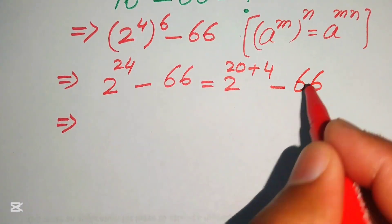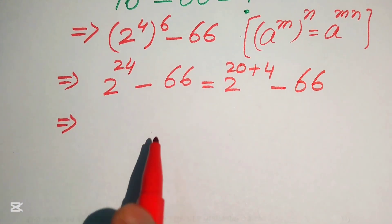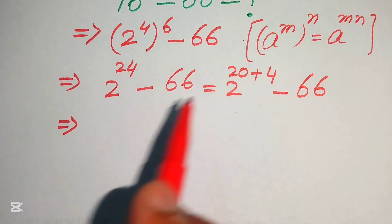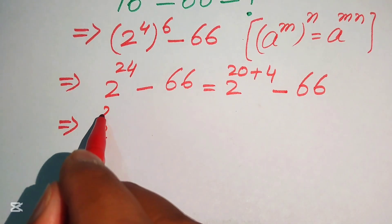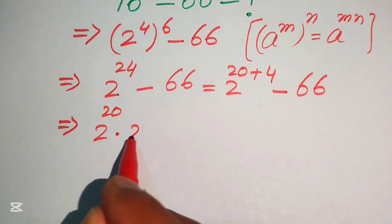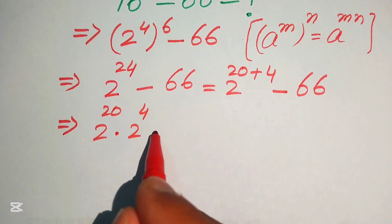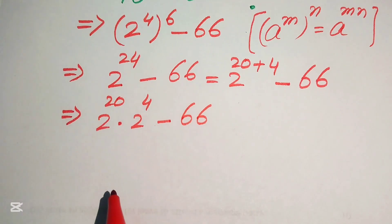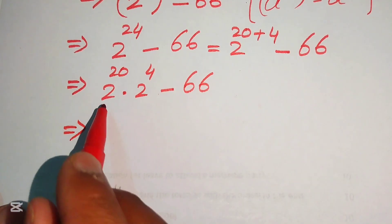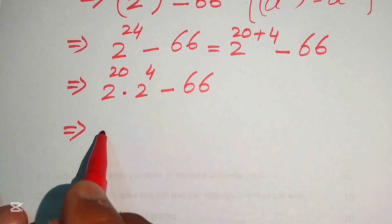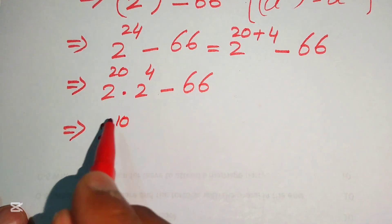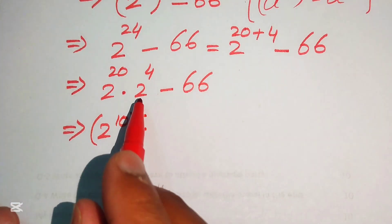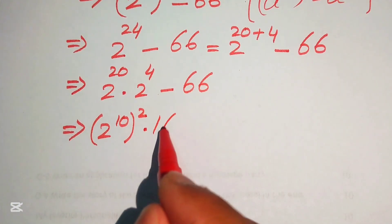We apply another exponent law and break the exponent: it is written as 2 to the power of 20, multiplied by 2 to the power of 4, minus 66. We then rewrite this expression as 2 to the power of 10, whole squared, and we know that 2 to the power of 4 equals 16.